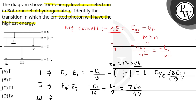For transition 3, which goes from 2 to 1: E2 minus E1 equals minus E-naught over 4 minus minus E-naught, which equals E-naught times 1 minus 1 over 4, giving 3E-naught over 4.